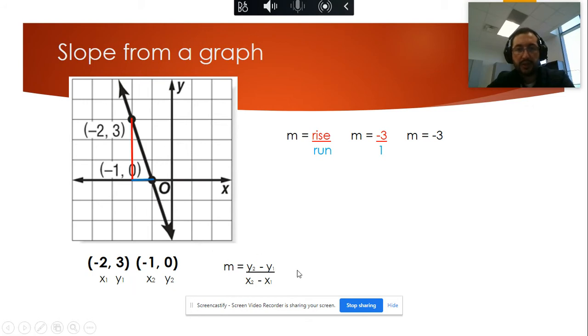So the two-point formula, we can use it every time. So it will be 0 minus 3 and -1 minus -2. And we can simplify this as -3 divided by 1, and my slope is -3. So as we can see, the answer is the same for the slope if we use rise over run or if we use the two-point formula.